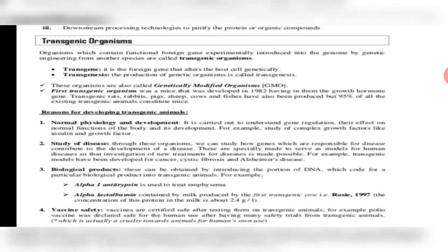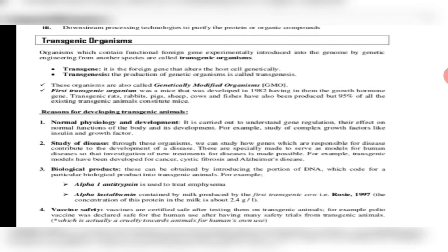For this, we require transgenic organisms. Transgenic organisms are those organisms in which we have added recombinant DNA — which have been genetically engineered. Those organisms are known as transgenic organisms. A transgene is a foreign gene that alters and manipulates the host cell genetically. Transgenesis is the process of production of a genetically modified organism, or GMO.